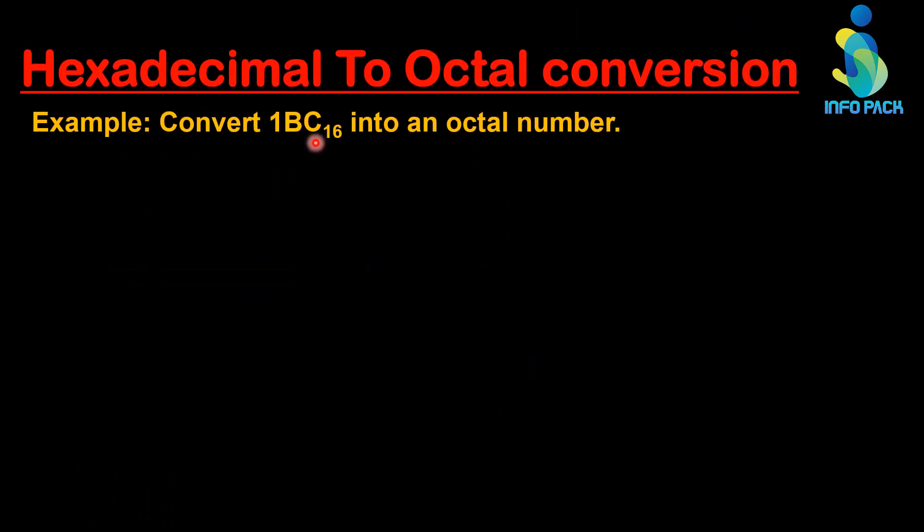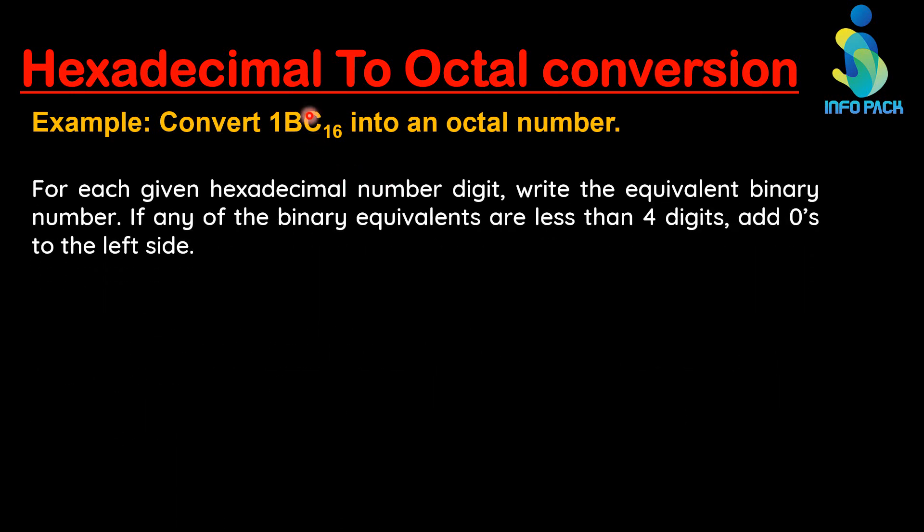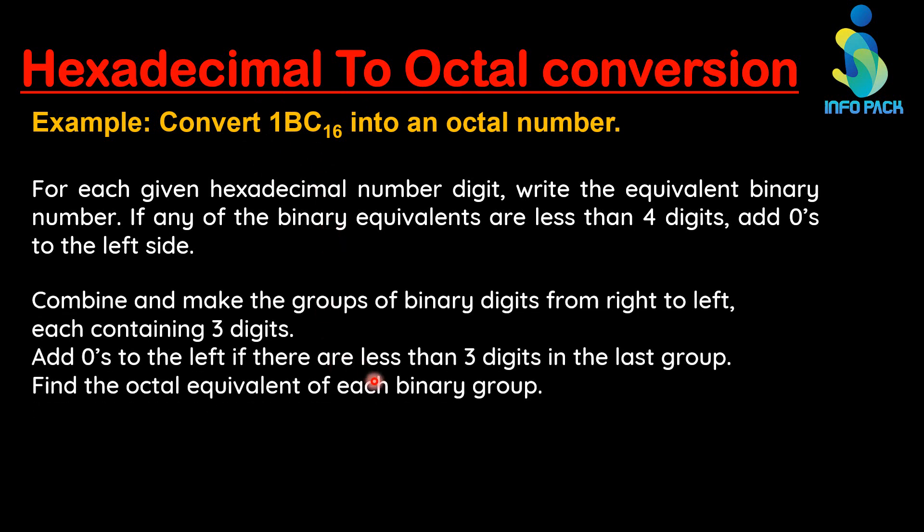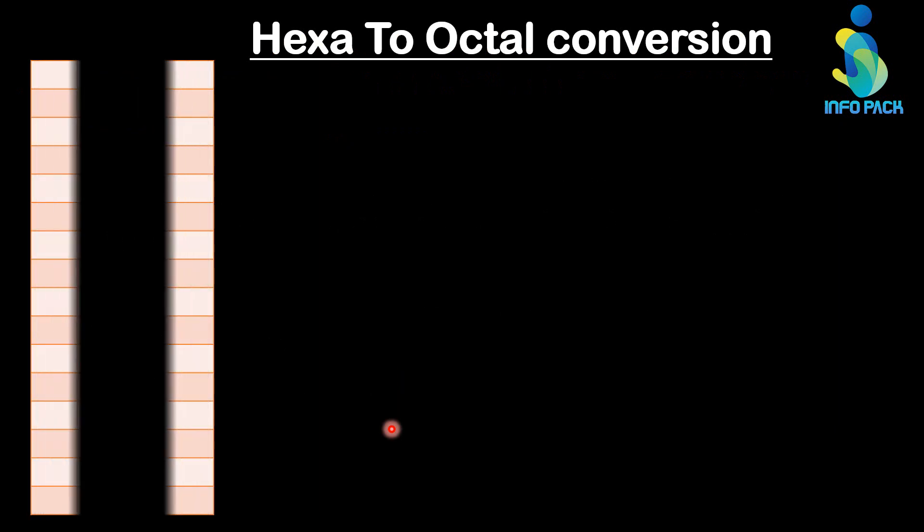This is a number 1BC in hexadecimal form. To convert it into octal, first of all, take the binary of this number. After this, make groups of three digits and then convert it into octal.